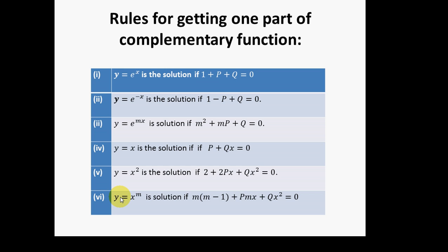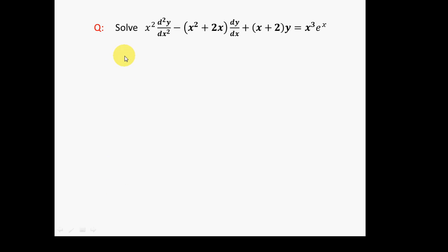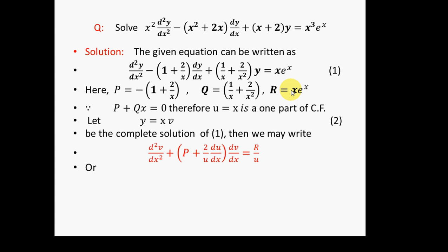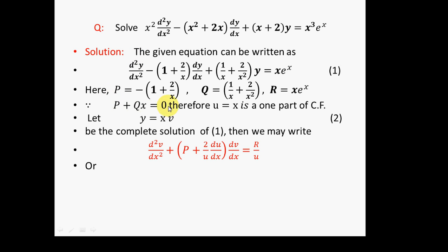Now we have an example: solve x²(d²y/dx²) − x(x+2)(dy/dx) + (x+2)y = x³eˣ. For the solution, first write the equation in standard form by making the coefficient of d²y/dx² equal to 1: d²y/dx² − (1 + 2/x)(dy/dx) + (1/x + 2/x²)y = xeˣ. Comparing with the standard form, we identify P, Q, and R. Checking the table condition P + Qx = 0, which is satisfied — so u = x is the one part of the complementary function.